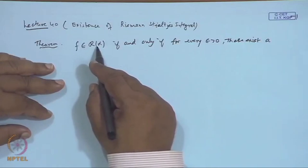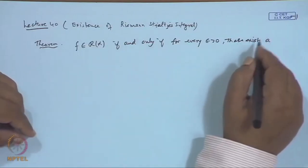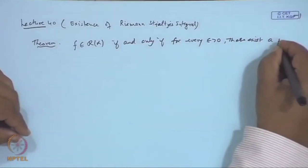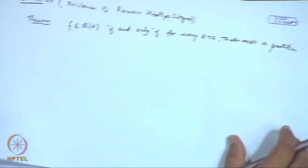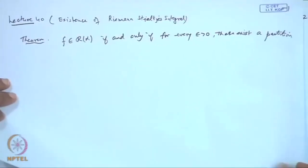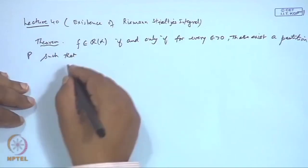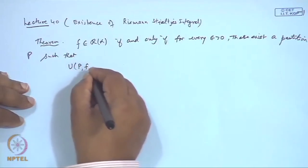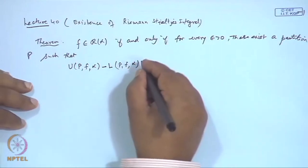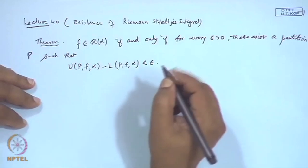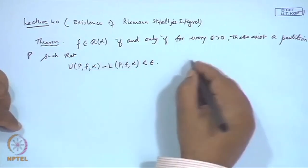f belongs to R(α) — that is, f is an element of the class of Riemann-Stieltjes integrable functions — if and only if for every ε > 0 there exists a partition P such that U(P,f,α) minus L(P,f,α) is less than ε. Let us call this Condition 1.